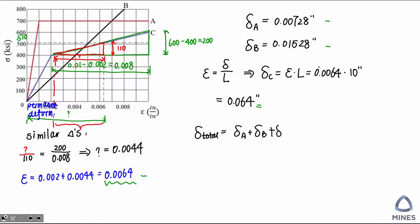Which means the total deformation is these three parts added together. Finally, the total elongation for this axially loaded bar is going to be 0.08656 inches.